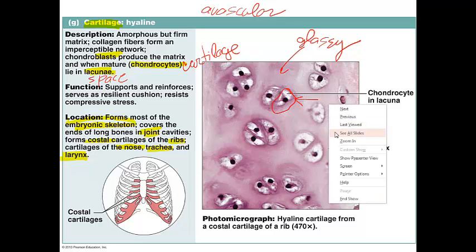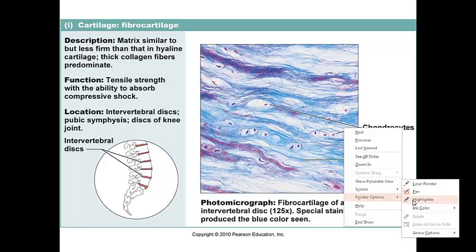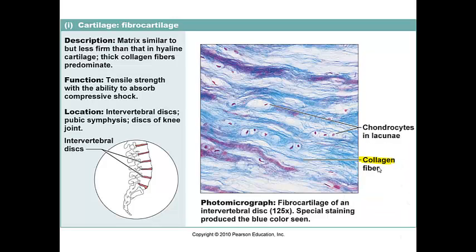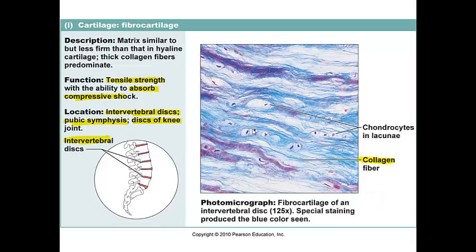The third type of cartilage is fibrocartilage. What makes it stand out is an abundance of collagen, which makes this type of cartilage much tougher. It's compressible and resists tension, so it's found in places like the intervertebral discs — which deal with a lot of compressive forces — the pubic symphysis, and the menisci of the knee. A special characteristic is tensile strength and the ability to absorb compressive shock. On the slide, we see abundant collagen and a small number of chondrocytes in lacunae.